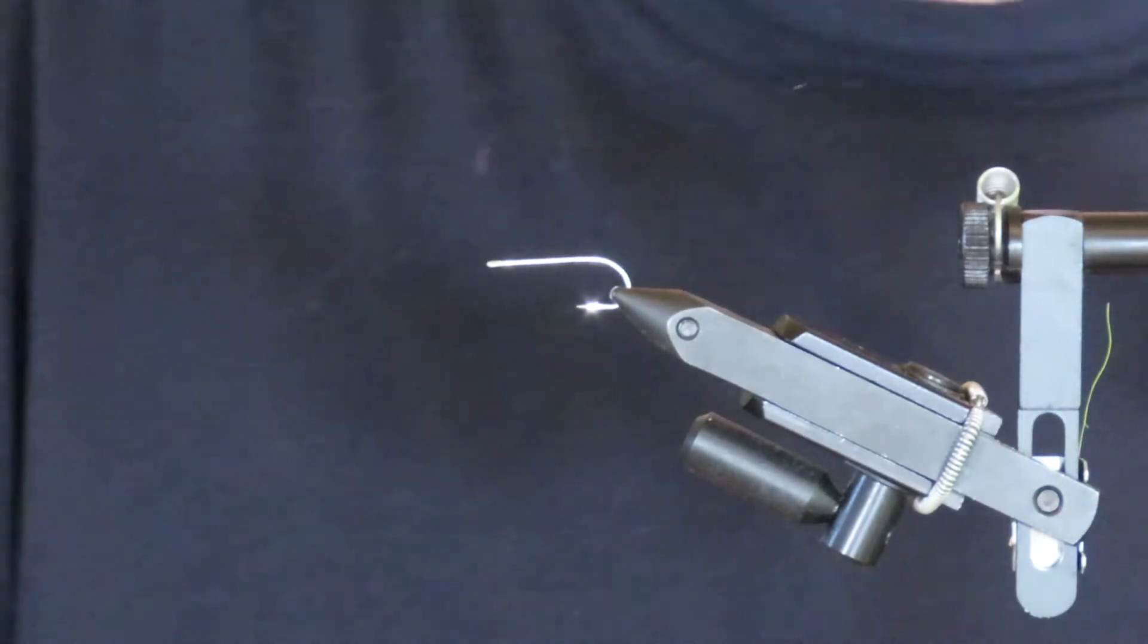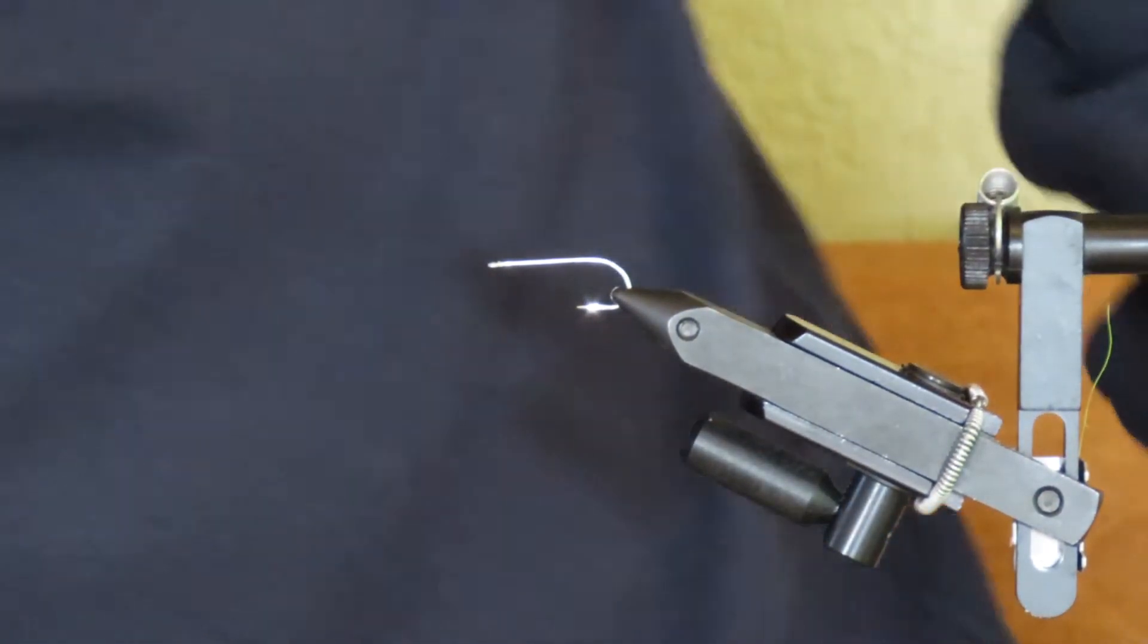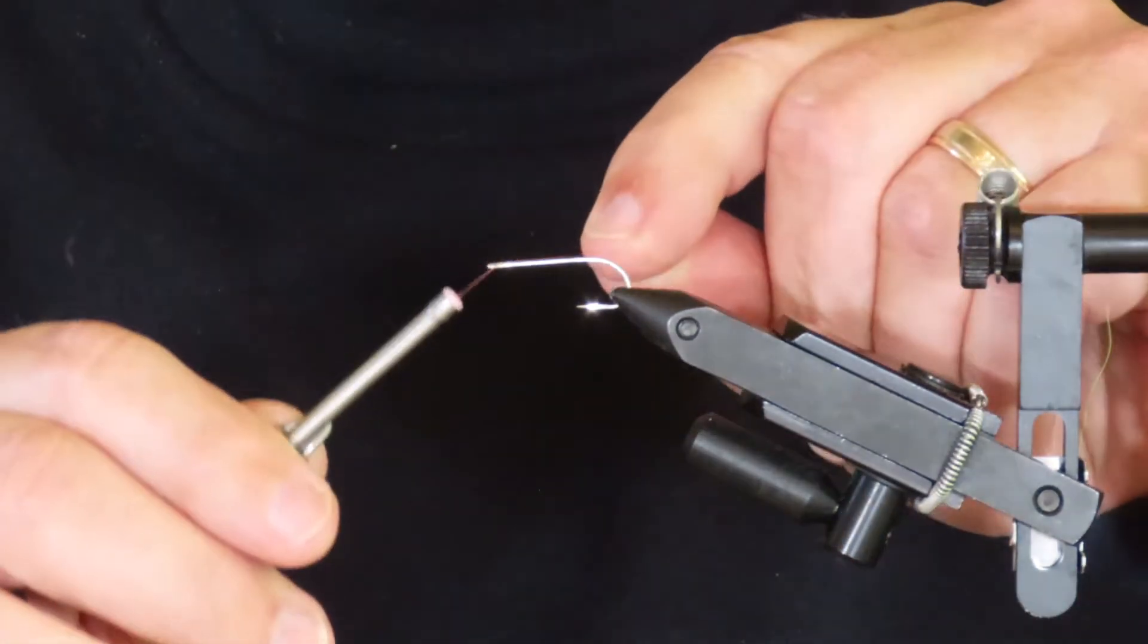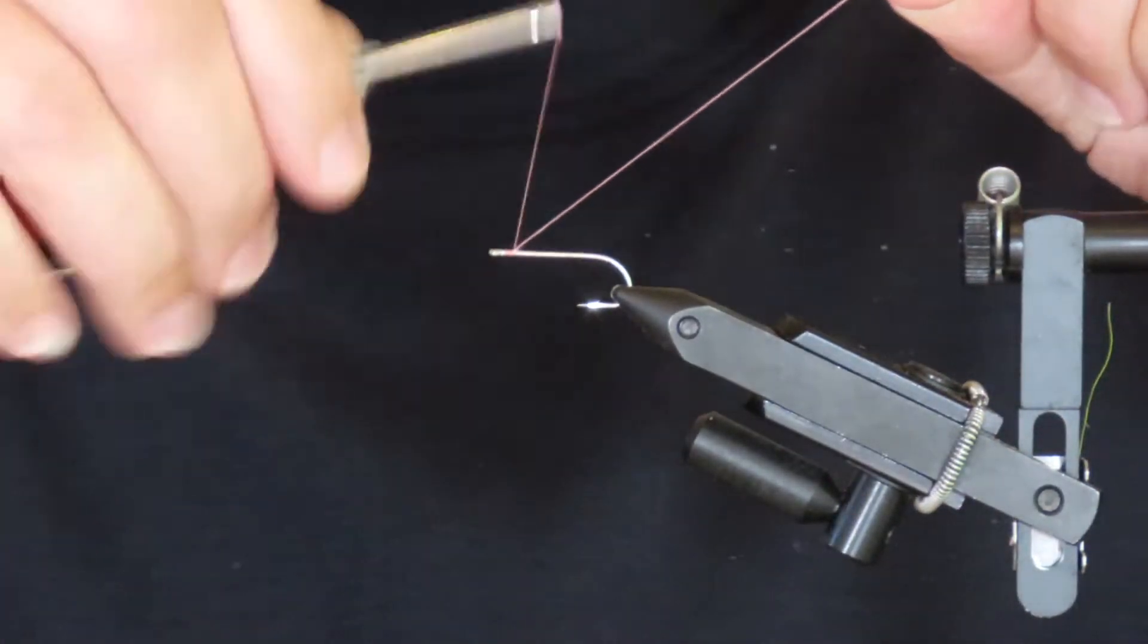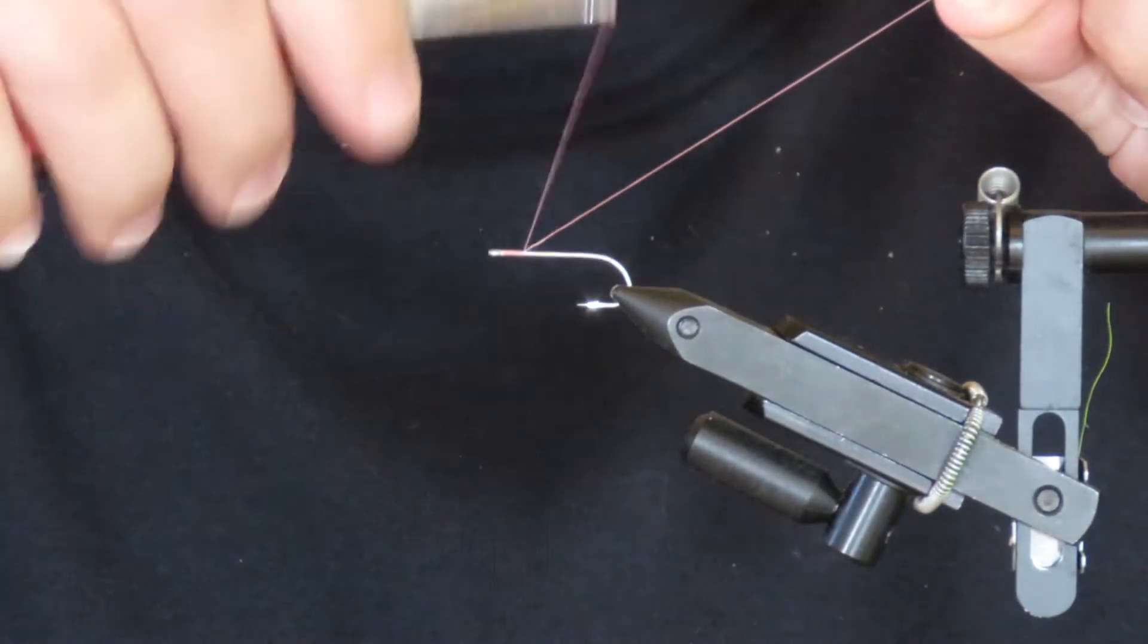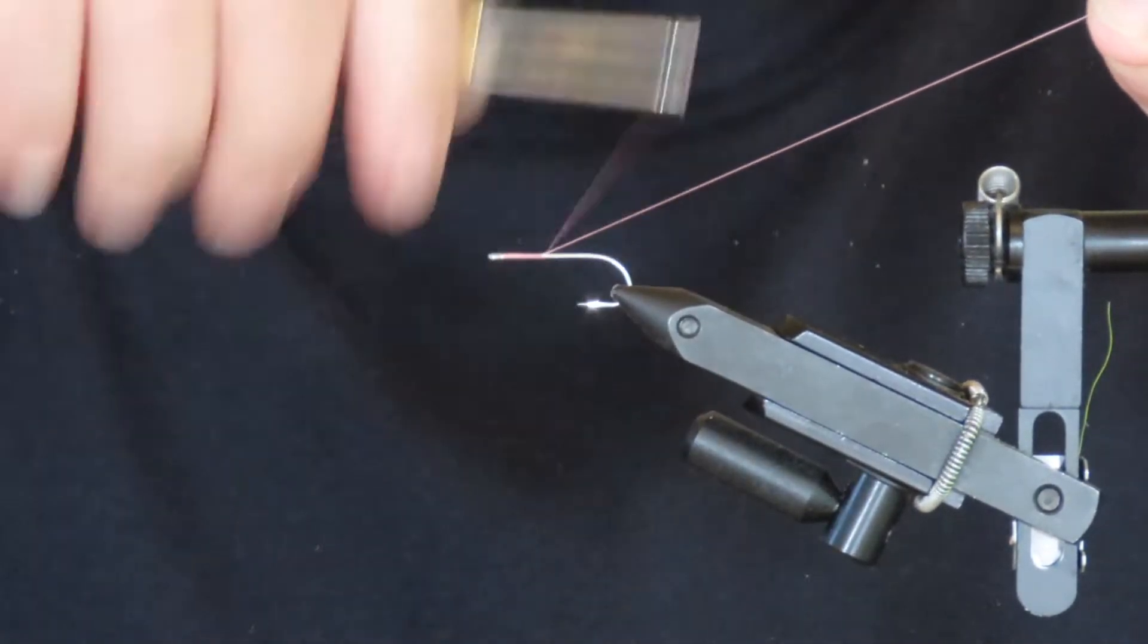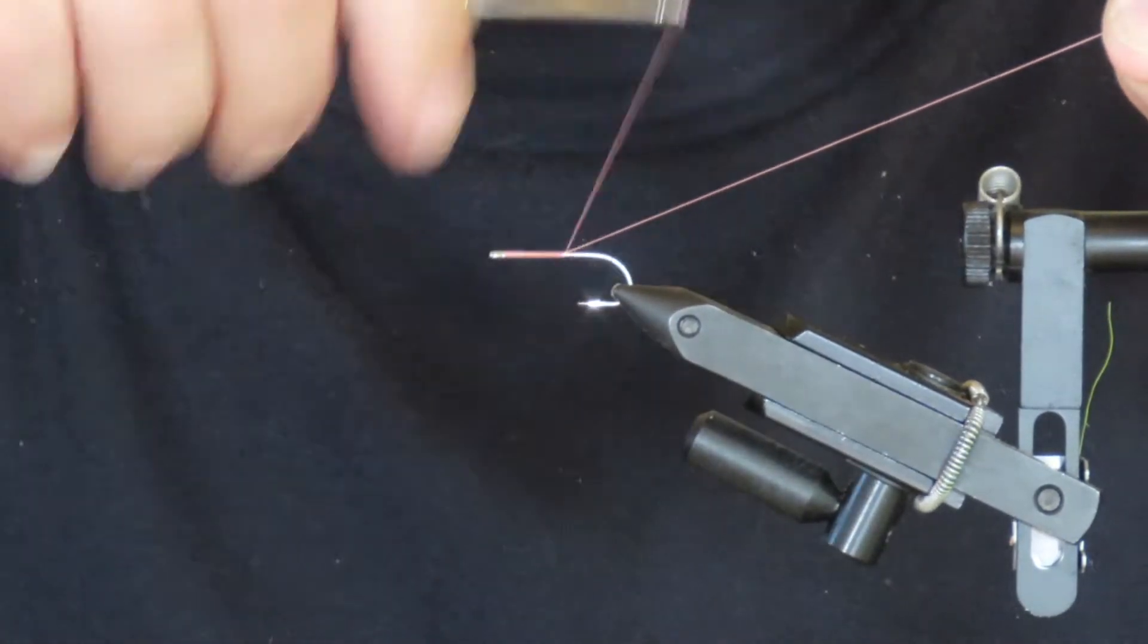In the vise I have a Gamakatsu SS15 size 8, which is the hook in the original recipe. The hook in the book illustration and also in the flies that they sell commercially is a forged hook—I'm thinking it's probably a Tiemco 911 or 911S, so the equivalent size for that would be a size 6. I'm going to list all the materials at the end of the video.